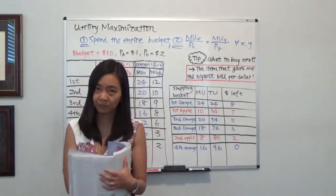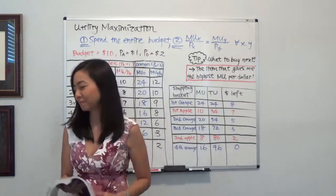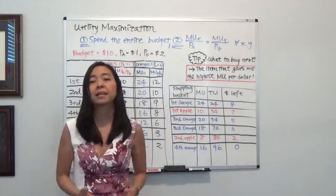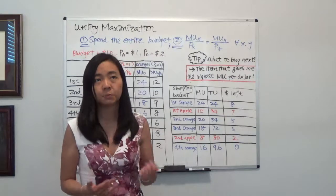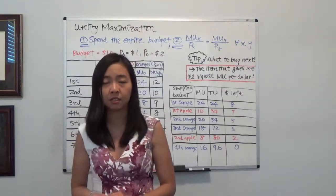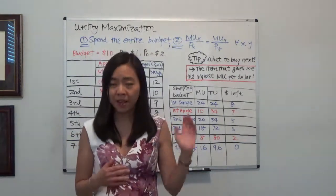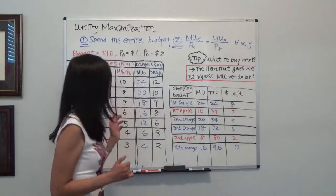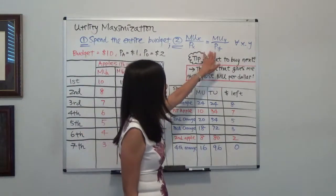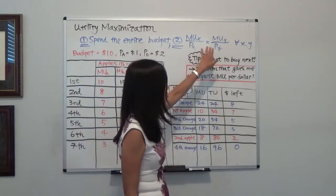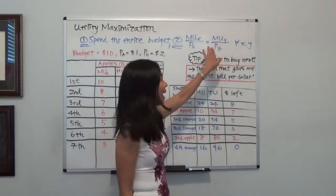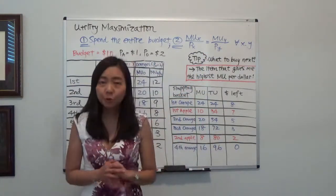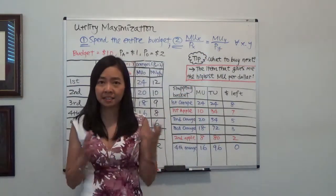We're looking at Table 7.1. In my previous video, we mentioned how to maximize our utility. First, you need to spend the entire budget. Next, you need to make sure that marginal utility per dollar must be equal for every single good at the last unit you purchase. So now we're going to take a look at an example.